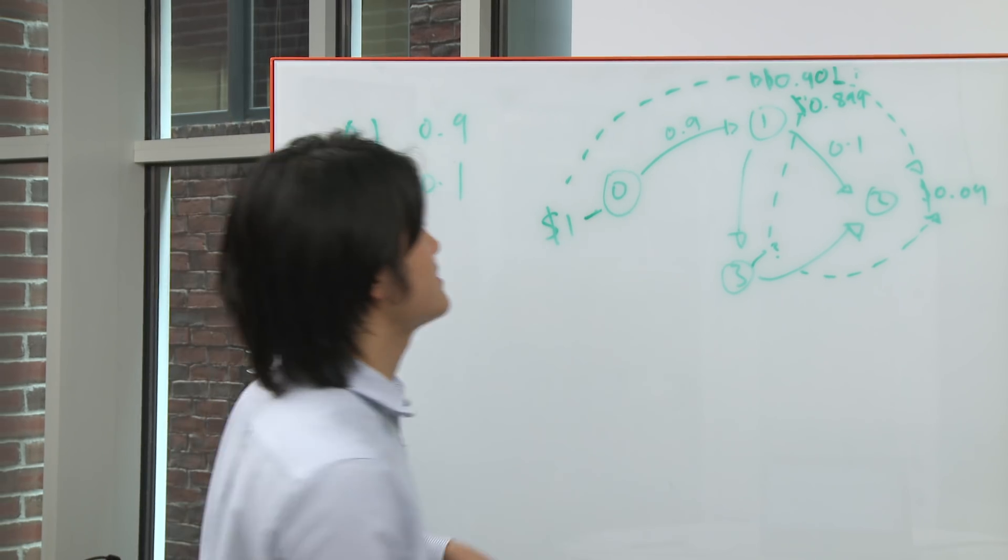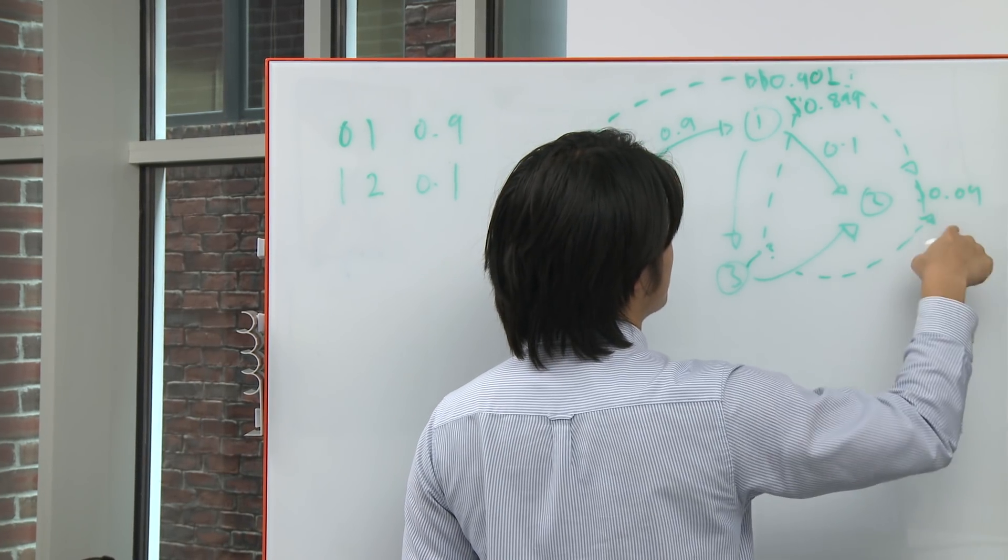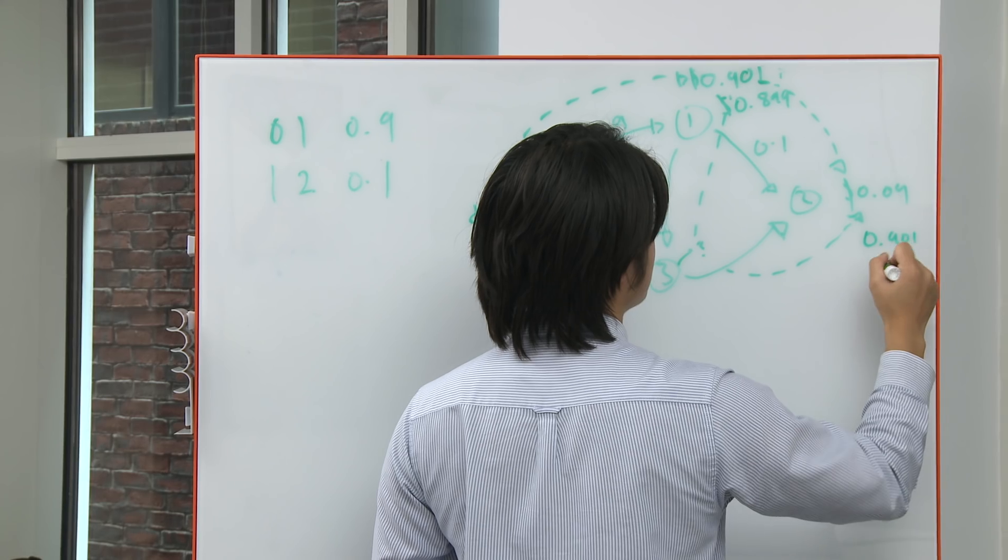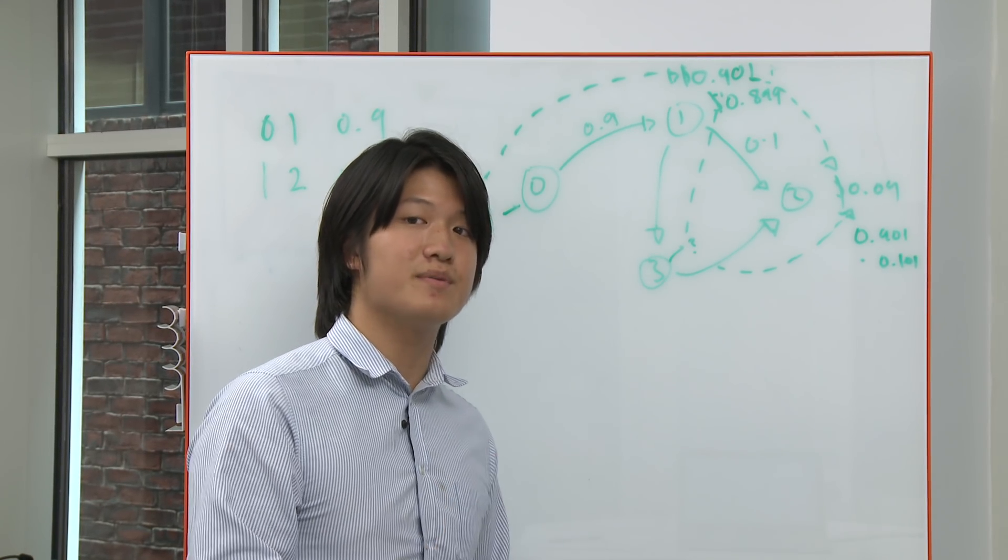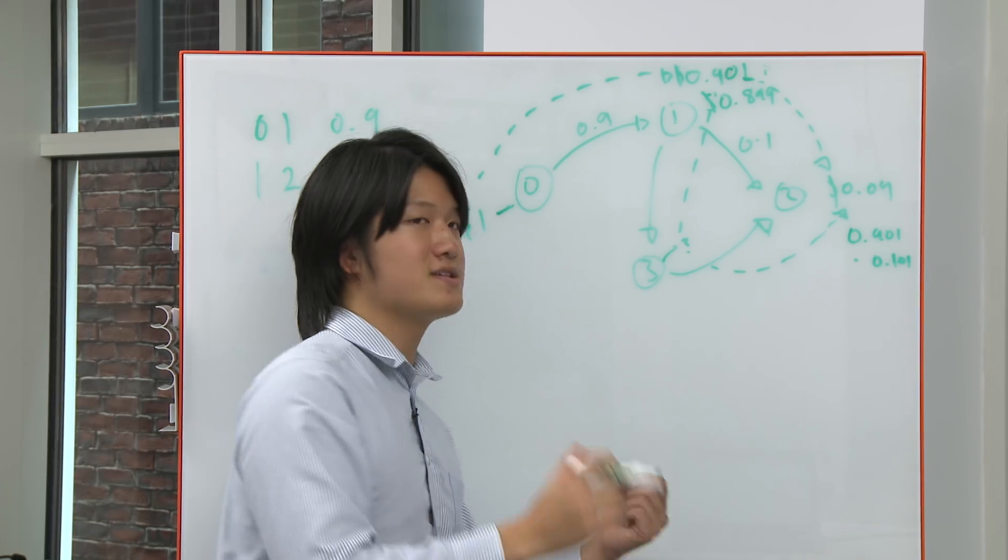And then we'd continue doing the same thing on the next one. So instead of 0.09, we'd store 0.901 times 0.101, whatever that is. It's something slightly bigger than 0.009. And the same in the reverse.